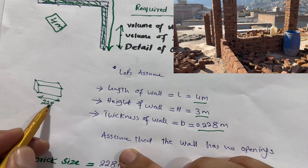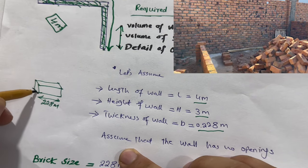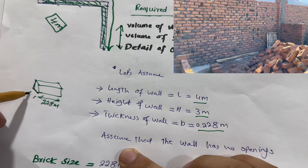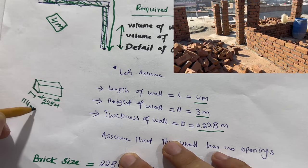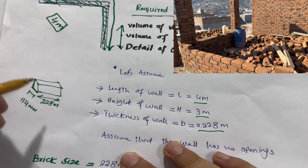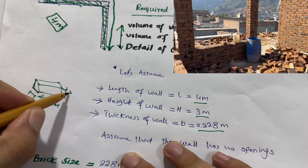Width is here, you can see this is its width. The width is 114 millimeter and the thickness, you can see which is this one, the thickness is 75 millimeter. This is the standard size of brick here where I'm living.